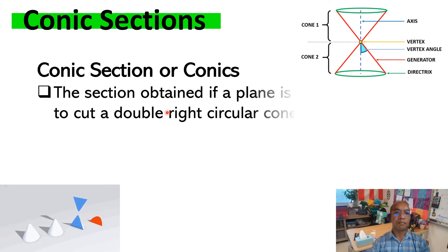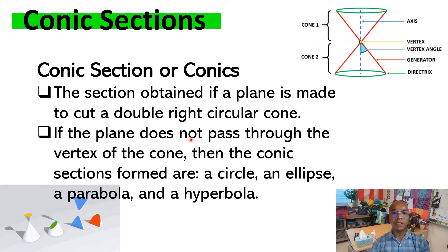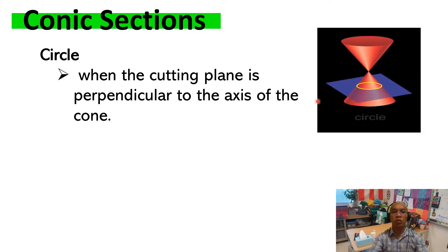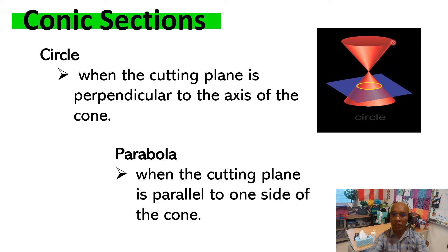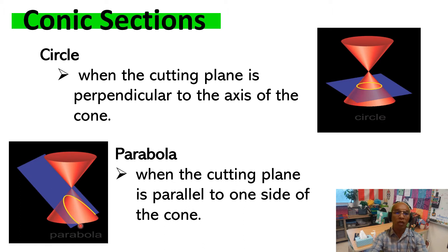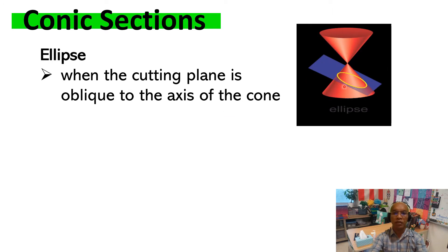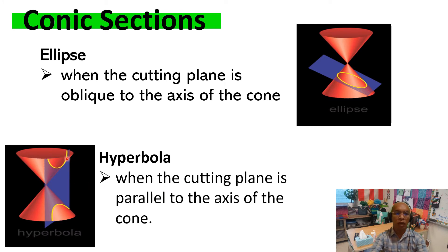Conic sections, or conics, are obtained when a plane cuts the double right circular cone. If the plane does not pass through the vertex, the conic sections formed are a circle, an ellipse, a parabola, or a hyperbola. When the cutting plane is perpendicular to the axis of the cone, the conic section formed is a circle. When the cutting plane is parallel to the side of the cone, the conic section formed is a parabola. When the cutting plane is oblique to the axis, that is an ellipse. When the cutting plane is parallel to the axis of the cone, that is a hyperbola.